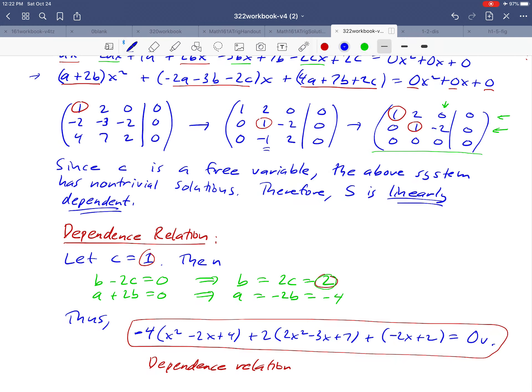There we go. I was thinking the whole time. Something doesn't seem quite right here. So with that little fix here, this is our dependence relation. And notice that it would be possible to take this formula and to solve it for one of the vectors in terms of the other two. For example, we could isolate negative 2x plus 2 by throwing the other two terms on the other side. And we would have written negative 2x plus 2 as a linear combination of the other two polynomials.